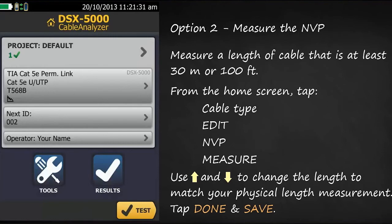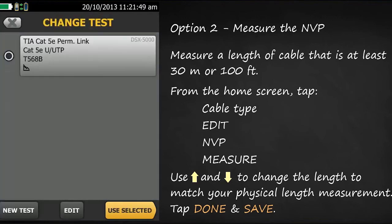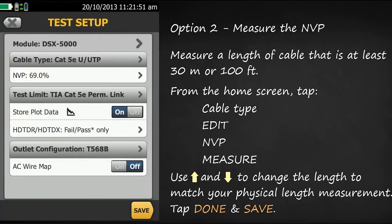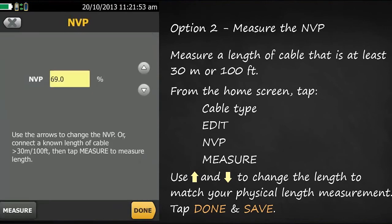Another way is to measure the MVP of the cable. You'll need a length of cable that's at least 30 meters or 100 feet — the longer the better. Physically measure it and note that value. Terminate the cable with a jack at each end and connect using the permanent link adapters. Then from the home screen, tap where your cable type is, tap edit, tap MVP again, and in the bottom left-hand corner of the screen you'll see measure. Tap measure.